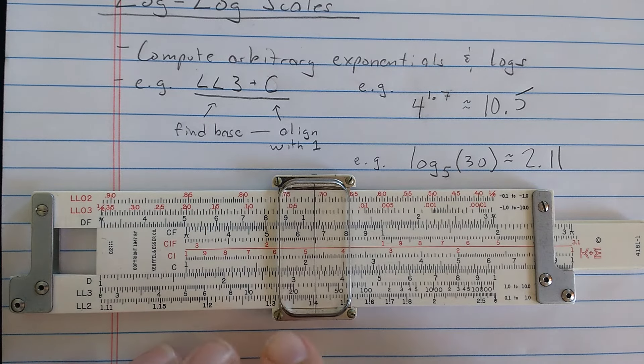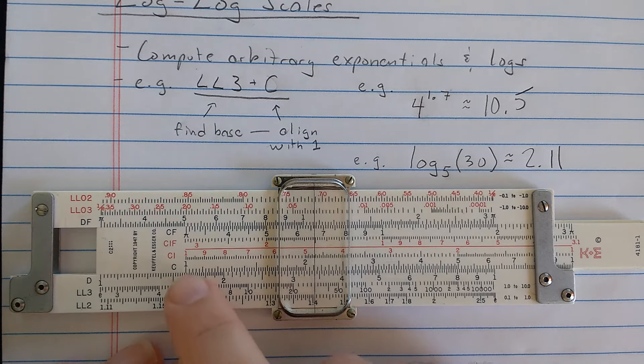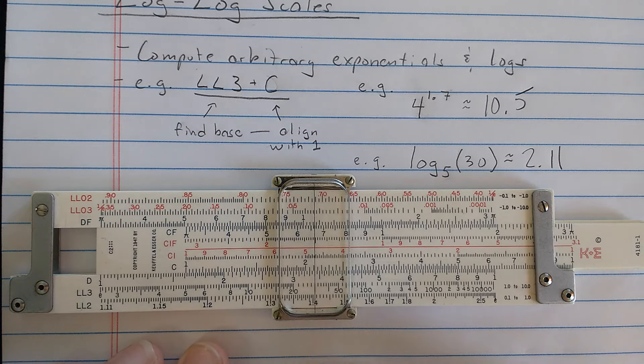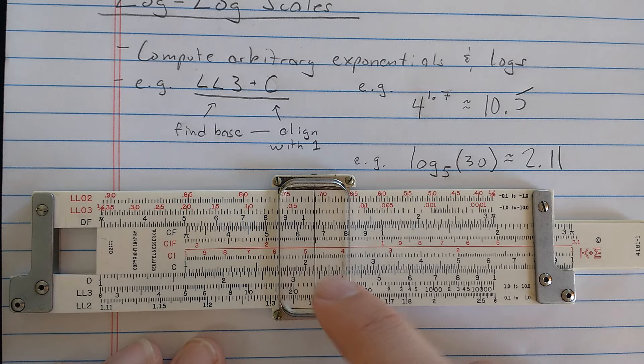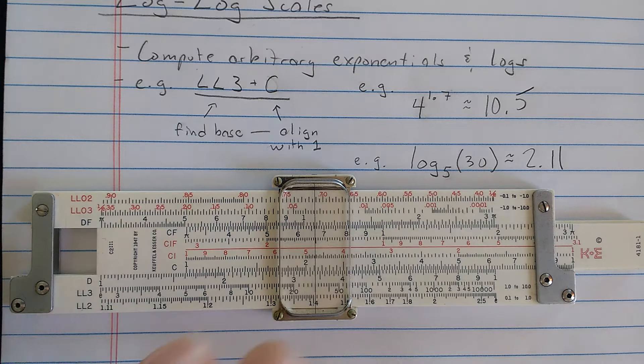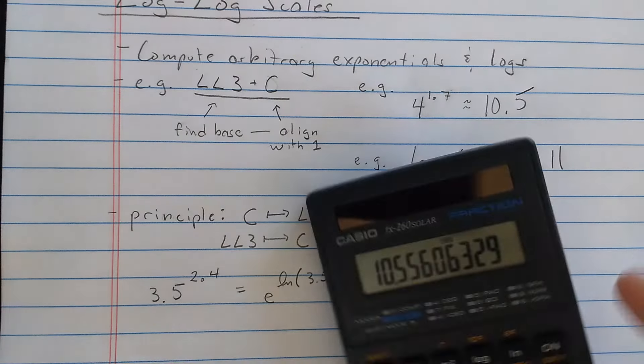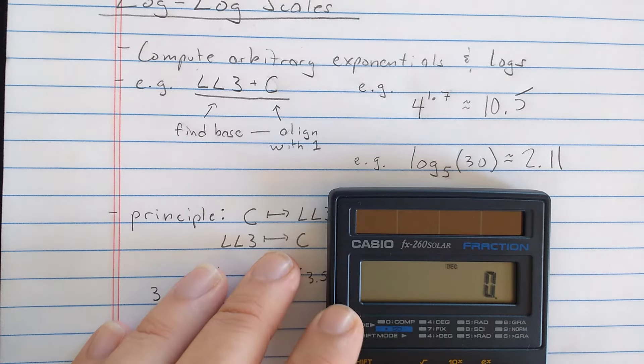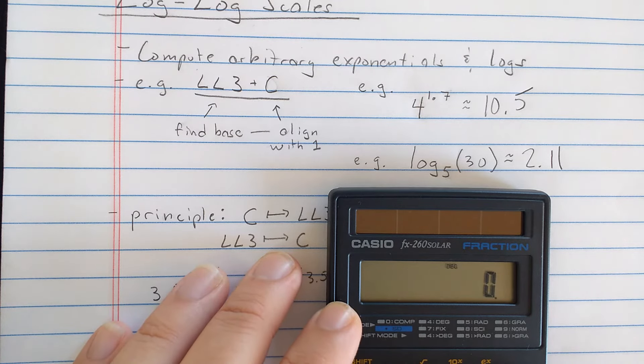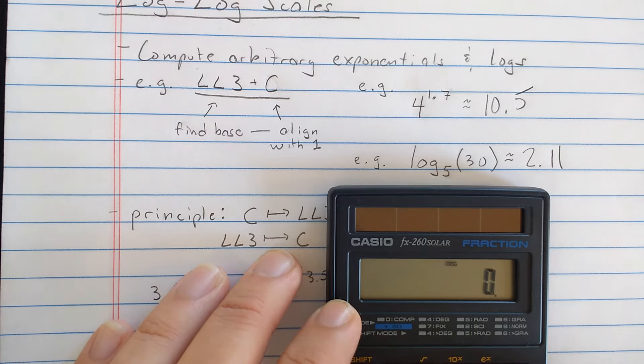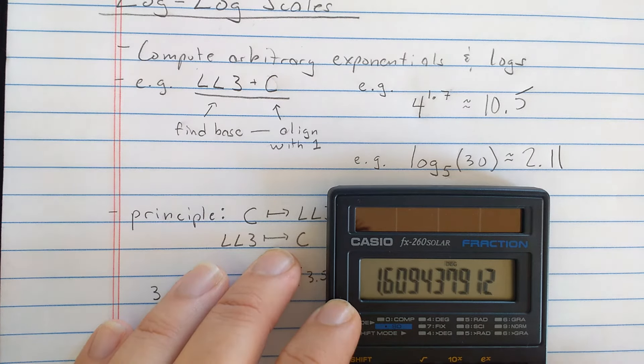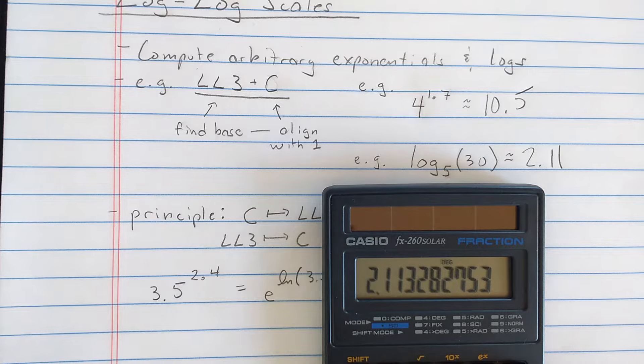Why does it work like that? Well, this is the same setting we just did, right? I took 5, I went to some power, and I got 30, except I asked the question, well, what is the power, right? So instead of reading the result on the log-log-3 scale, I read the result on the C scale. So let's check our computation here. So here, let's do this as 30, 2.11, not bad.